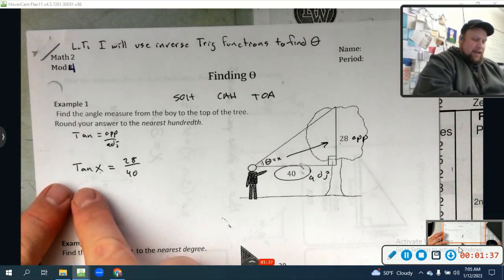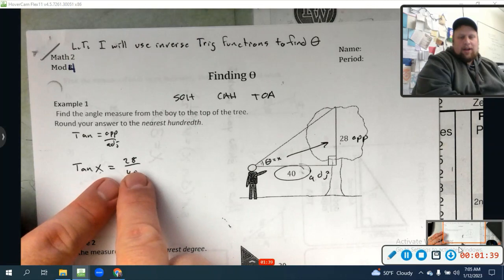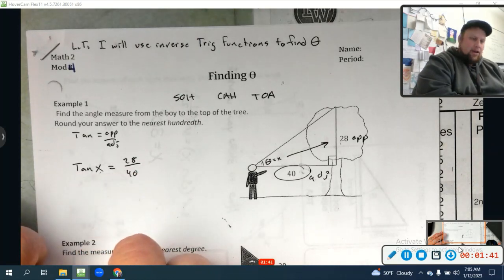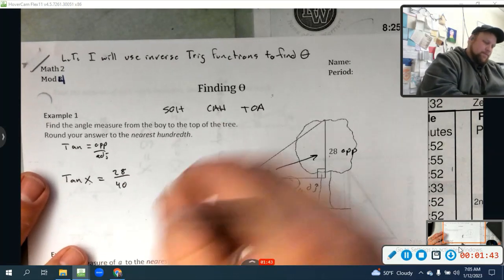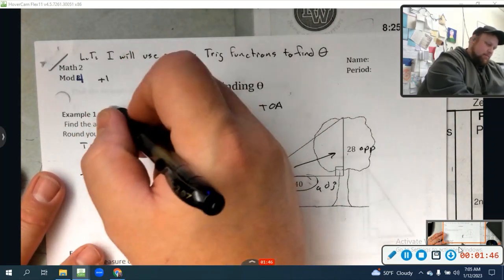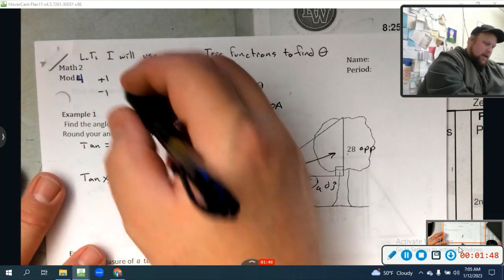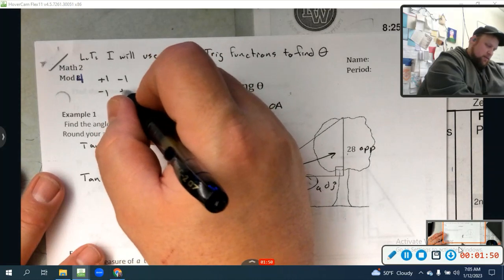It'd be nice if I could undo that tangent, and then I could find out what the angle is. Well, let's talk about that for a second. How do we undo a plus 1? We minus 1. How do we undo a minus 1? We plus 1.